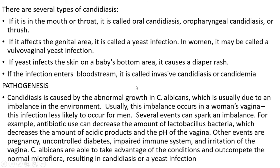Pathogenesis: candidiasis is caused by abnormal growth of Candida albicans, usually due to an imbalance in the environment — typically in a woman's vagina, and less likely to occur in men. Several events can spark this imbalance: antibiotic use can decrease the amount of Lactobacillus bacteria, decreasing acidic products and raising the pH of the vagina. Other events include pregnancy, uncontrolled diabetes, impaired immune system, and irritation of the vagina. Candida albicans takes advantage of these conditions and outcompetes normal microflora, resulting in candidiasis or yeast infection.